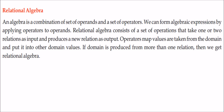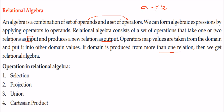Now we come to relational algebra. Whenever we work with DBMS, tables are present, and we need an algebra — a combination of a set of operands and operators. For example, in A + B, '+' is the operator and A and B are operands. Relational algebra consists of a set of operations that take one or two relations as input and produce a relation as output. The operations available in relational algebra are selection, projection, union, and Cartesian product.